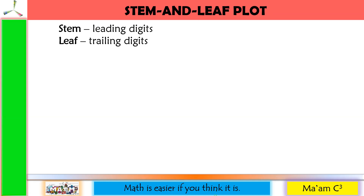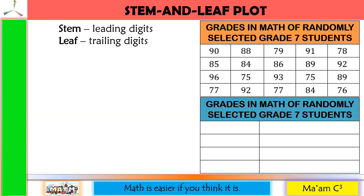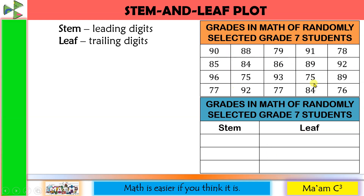Let us create a stem and leaf plot of this table. First, we have to indicate the title. Then we create two columns — label the first one 'stem' and the second one 'leaf.' Now let us inspect the data: all are two digits, and we have three unique numbers for the first digit: 9, 8, and 7. So we write those under the stem: 7, 8, 9.